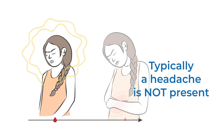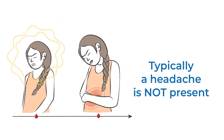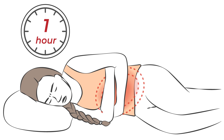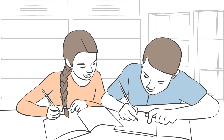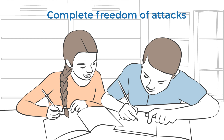An aura may occur before the abdominal symptoms. Each attack generally lasts from 1 hour to 3 days. A person with abdominal migraine will have complete freedom of symptoms between attacks, meaning that these symptoms do not linger.